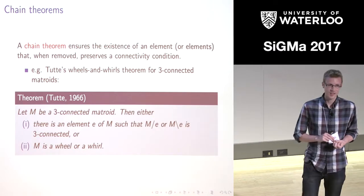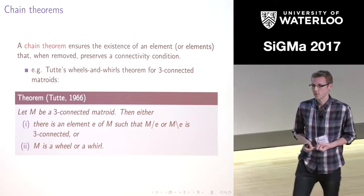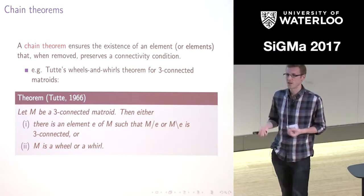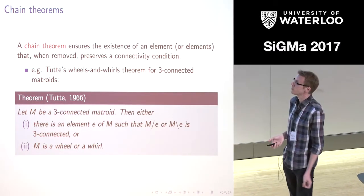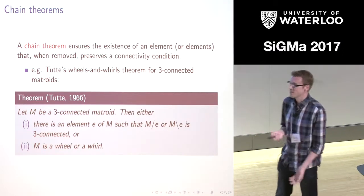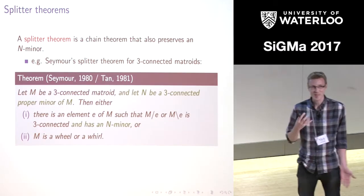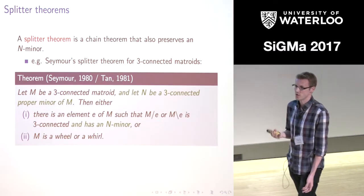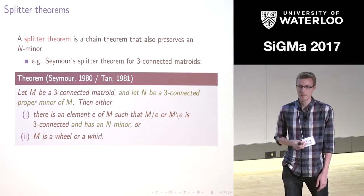I'll call this an instance of a chain theorem — a result where we can either delete or contract an element or elements and keep some connectivity condition. One way we can strengthen a chain theorem is to turn it into what I'll call a splitter theorem, where we also want to preserve an isomorphic copy of an N minor.